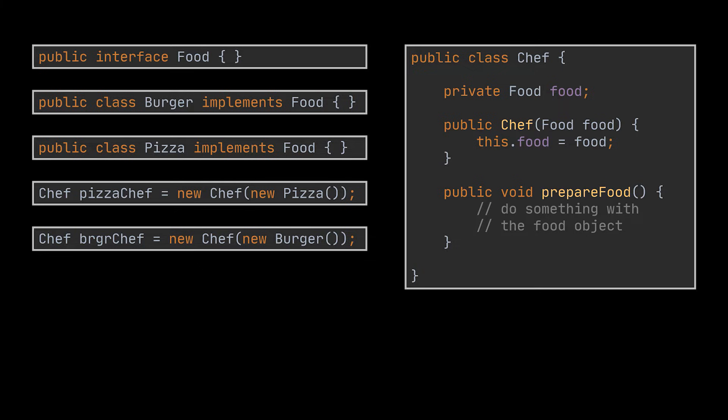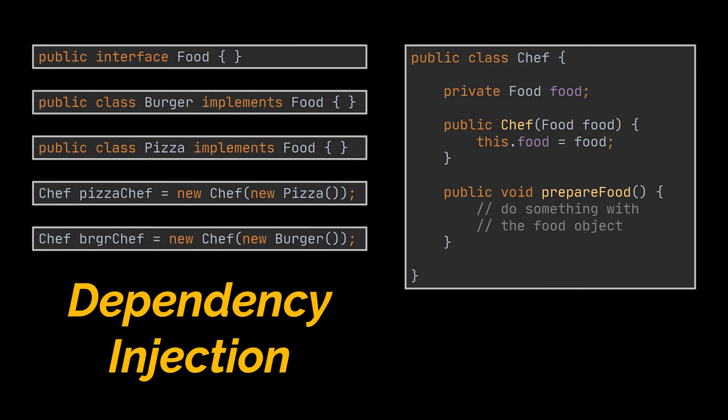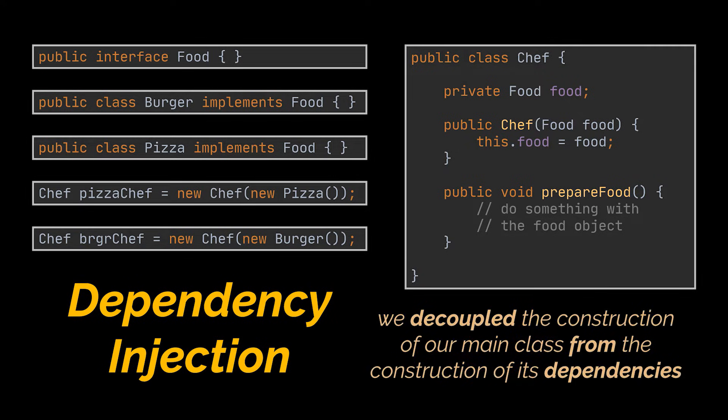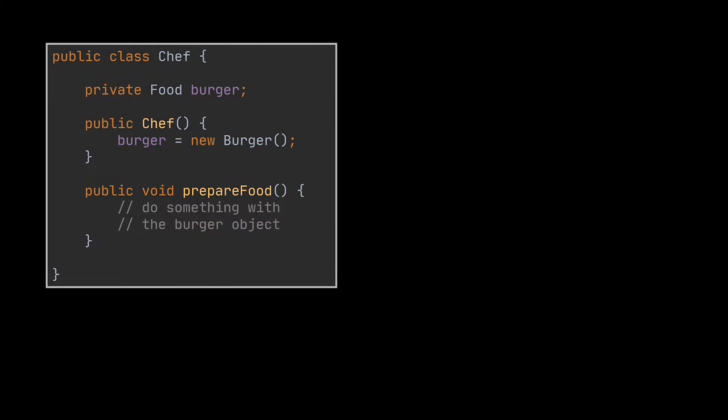What we did here is passing the dependency to the constructor of the dependent object while it is being instantiated. This is called dependency injection. This dependency was injected into the object instead of being created inside it. We decoupled the construction of the Chef class from the construction of its dependencies, the Food class in this example.